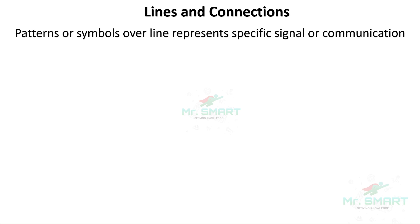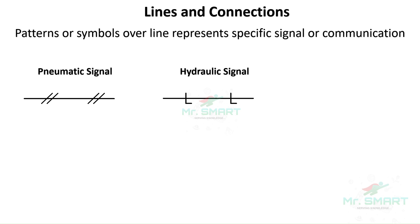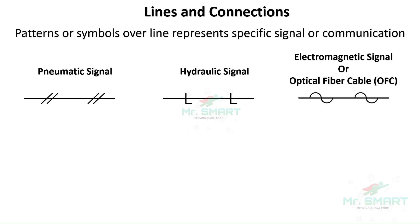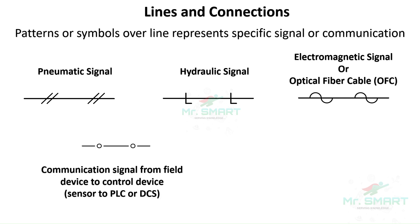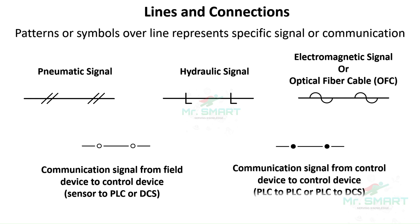Apart from these, some lines have special symbols or patterns over them representing special signal or communication connections. A double-slanted line over the straight line represents the pneumatic actuation signal. An L over the straight line represents the hydraulic actuation signal. A waveform over the straight line represents an electromagnetic signal or optical fiber cable connection. Unfilled or empty circles over the straight line represent communication signals from field devices to control devices. Filled circles over the straight line represent communication signals from control devices to other control devices. These symbols are not common, but knowing them will help you understand the control and communication signal line connections.